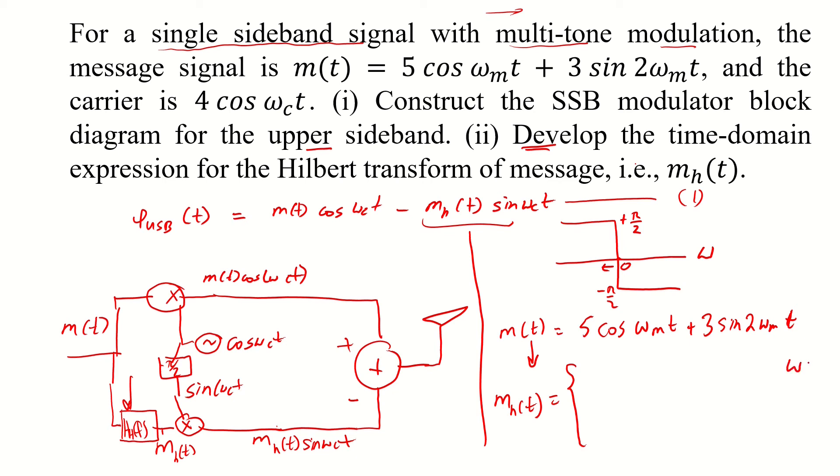So in this case function when omega is less than 0, we would have 5 cos omega mt plus pi by 2 plus 3 sin 2 omega mt plus pi by 2.